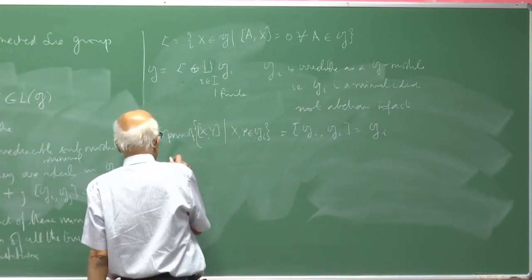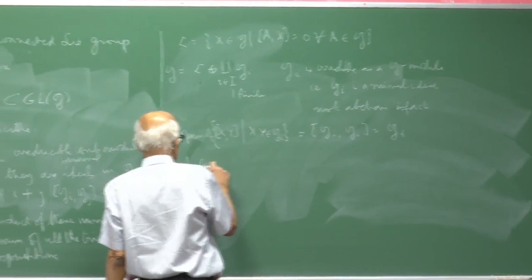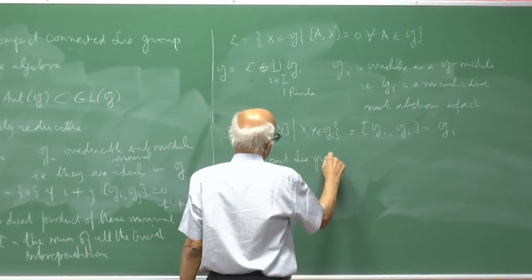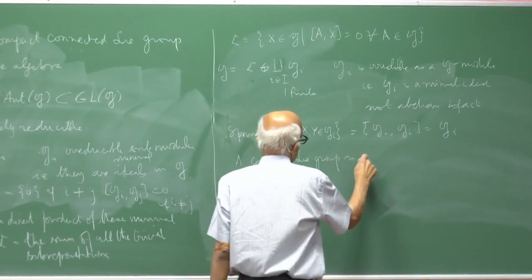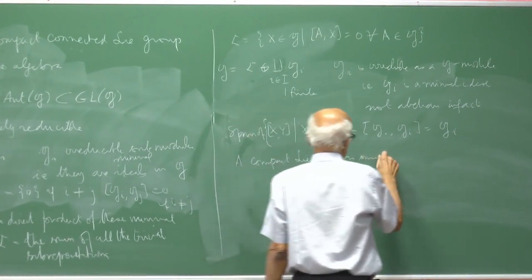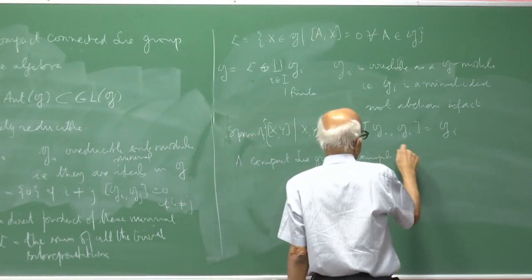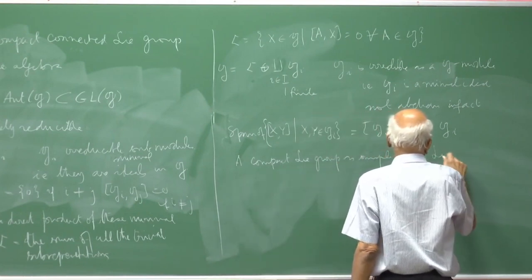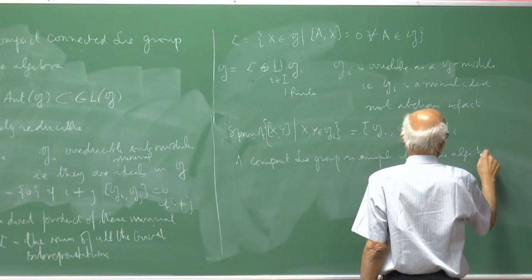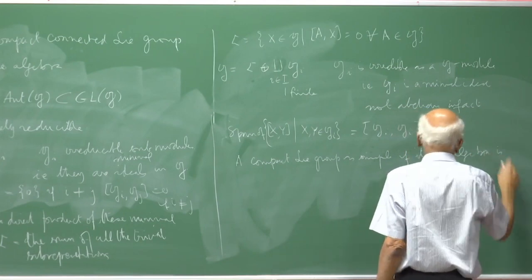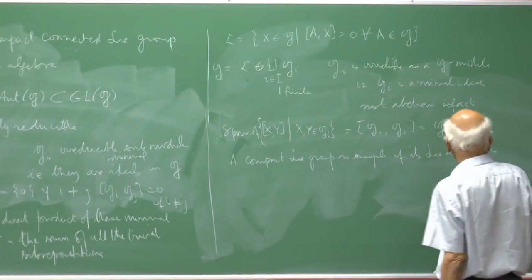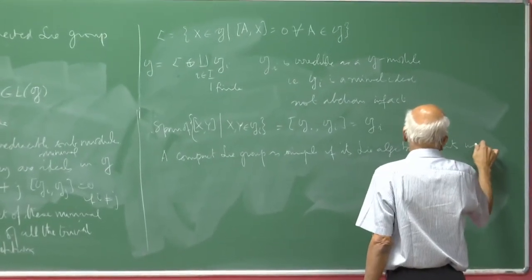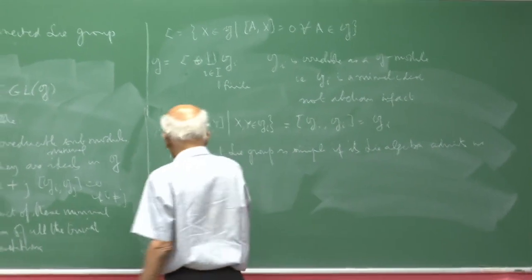A compact group is called simple if its Lie algebra admits no proper non-zero ideal.